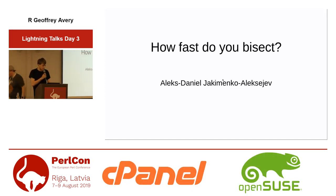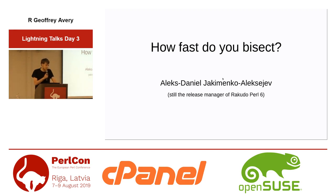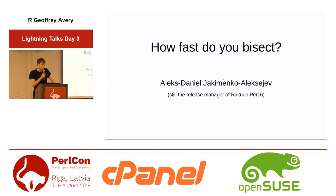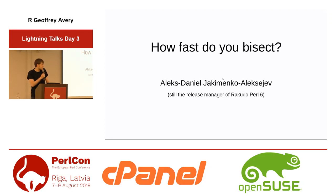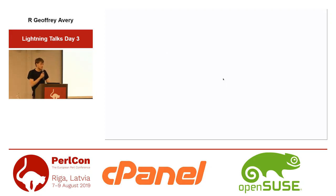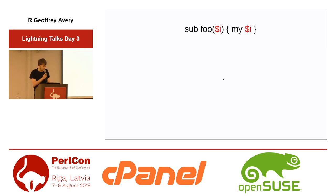Hello, I'm Alex Daniel and I'm still the release manager for Rakudo Perl 6. In Rakudo we have a couple of really cool tools, one of which is bisectable, and all the developers really love it. The problem it attempts to solve is something like this: you have a ticket that comes with a code snippet, and it turns out that previously we had something sensible as output — it warned about a redeclaration of a variable — but now we have something different, and the question is: when did this change?